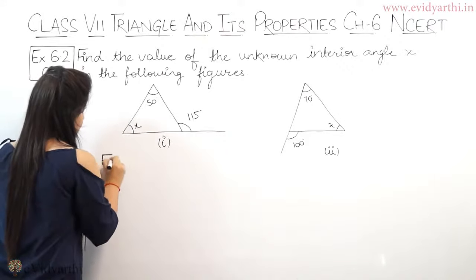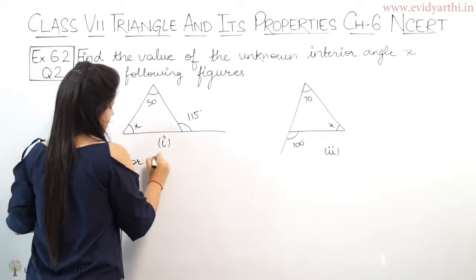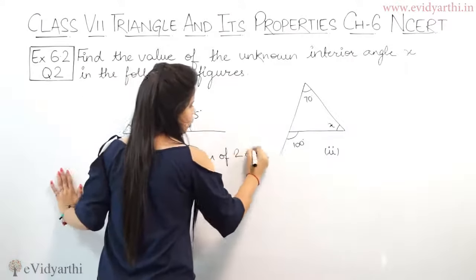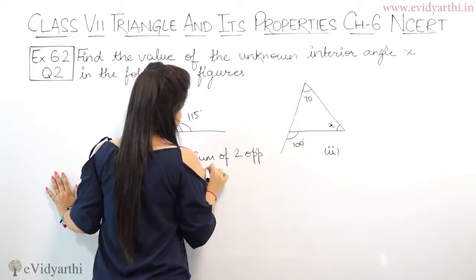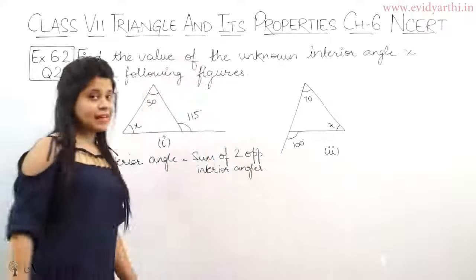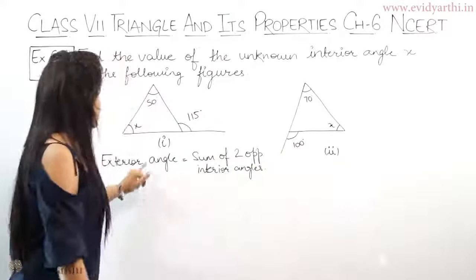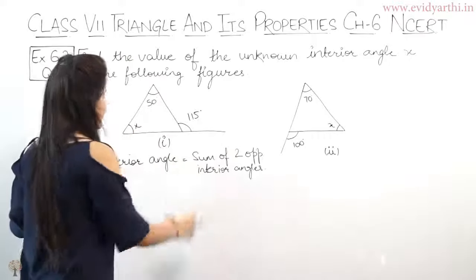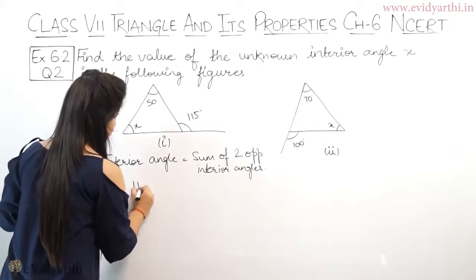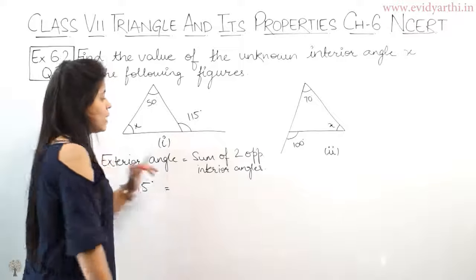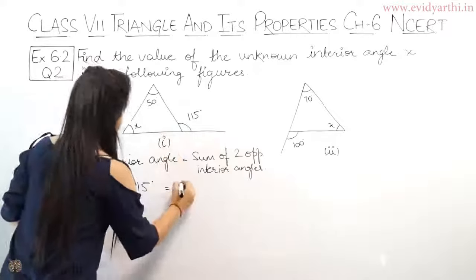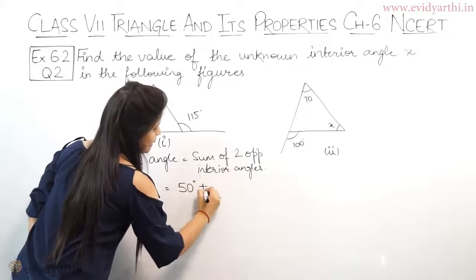You know that exterior angle equals the sum of two opposite interior angles. Right, this is our exterior angle triangle property. So applying this, we'll find the value of x. The exterior angle here is 115 degrees.